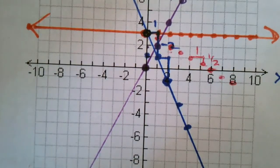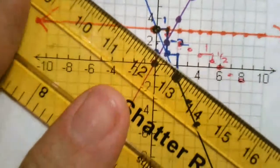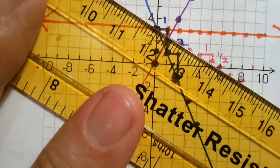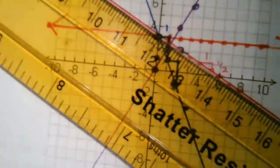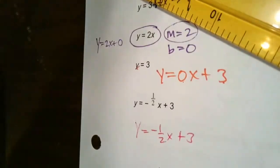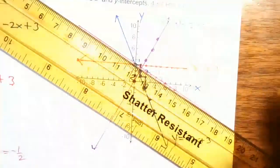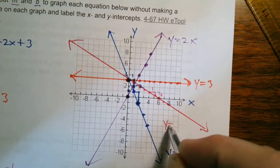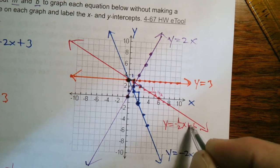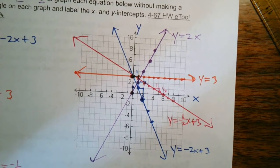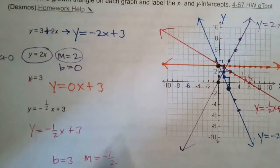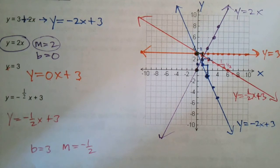That's what that one looks like. Now I can connect those. Once I have my dots, I can connect using my ruler. There I have my line, put my arrows on it and label it, y equals negative one-half x plus 3. There's the four lines given those four equations.